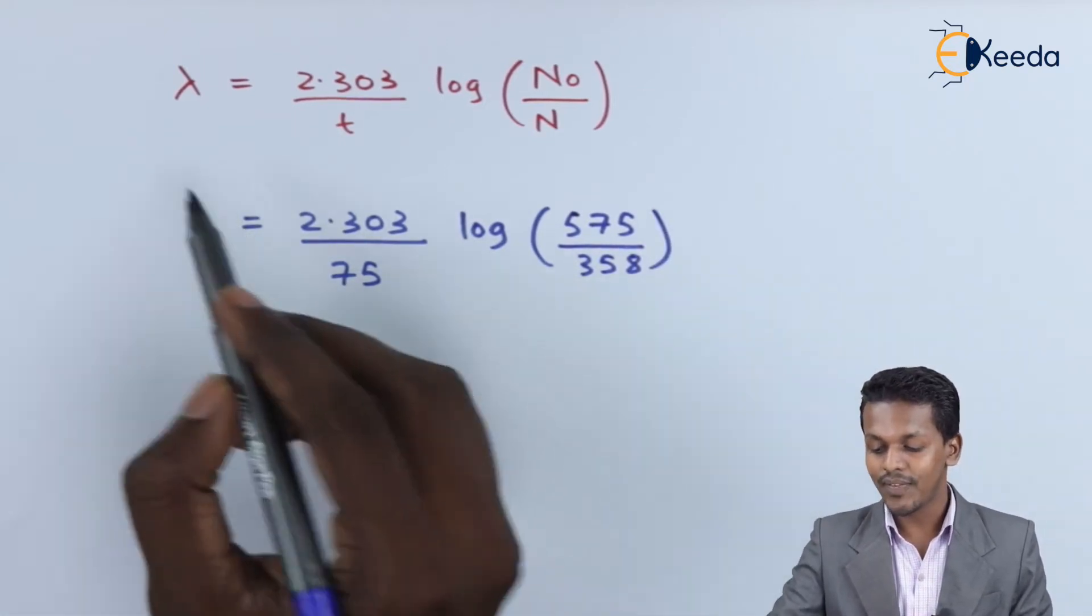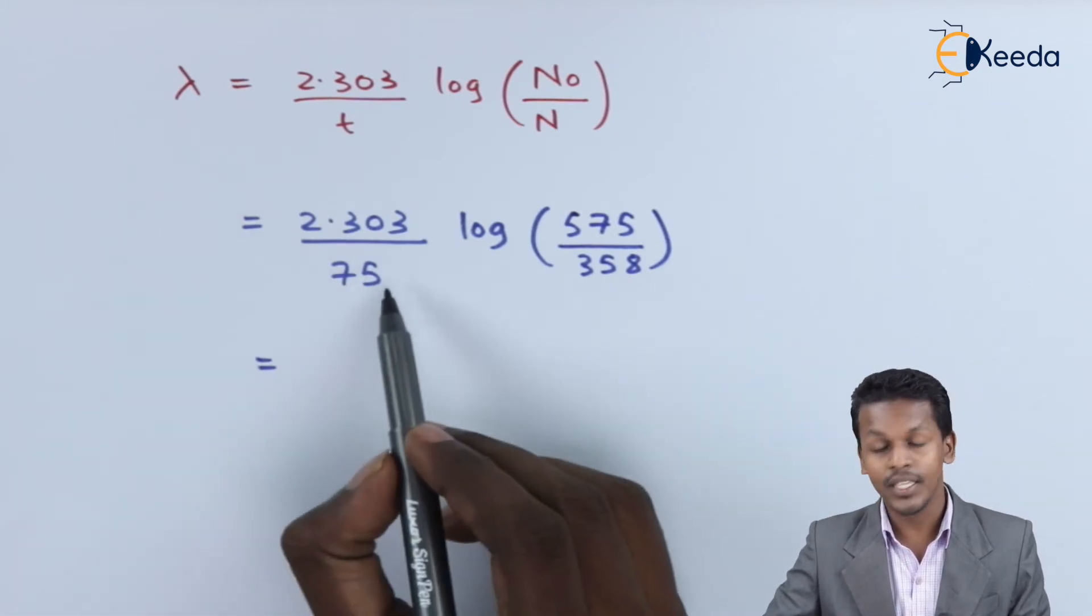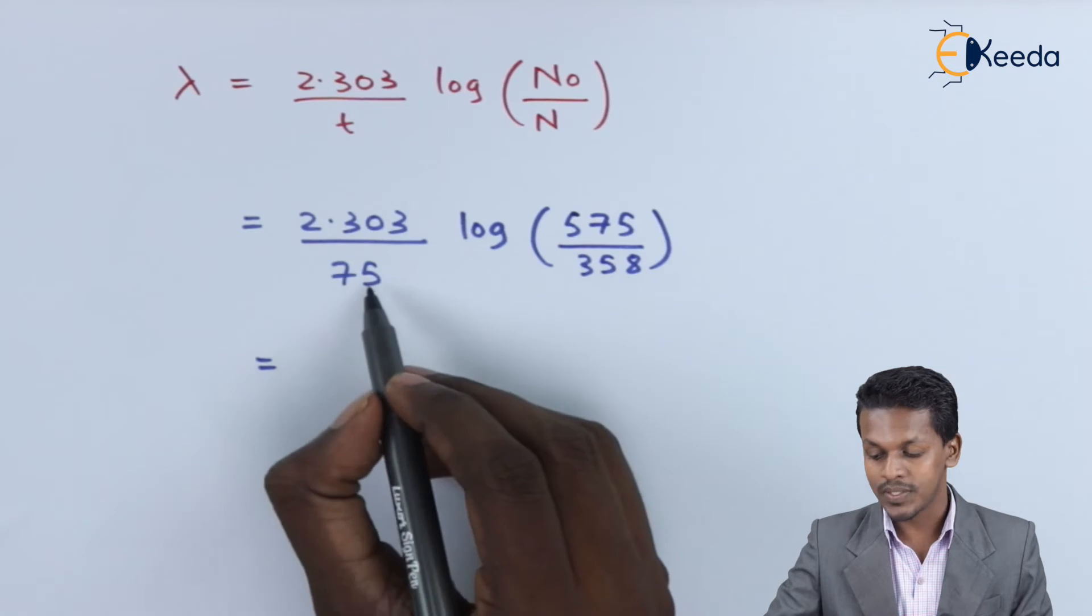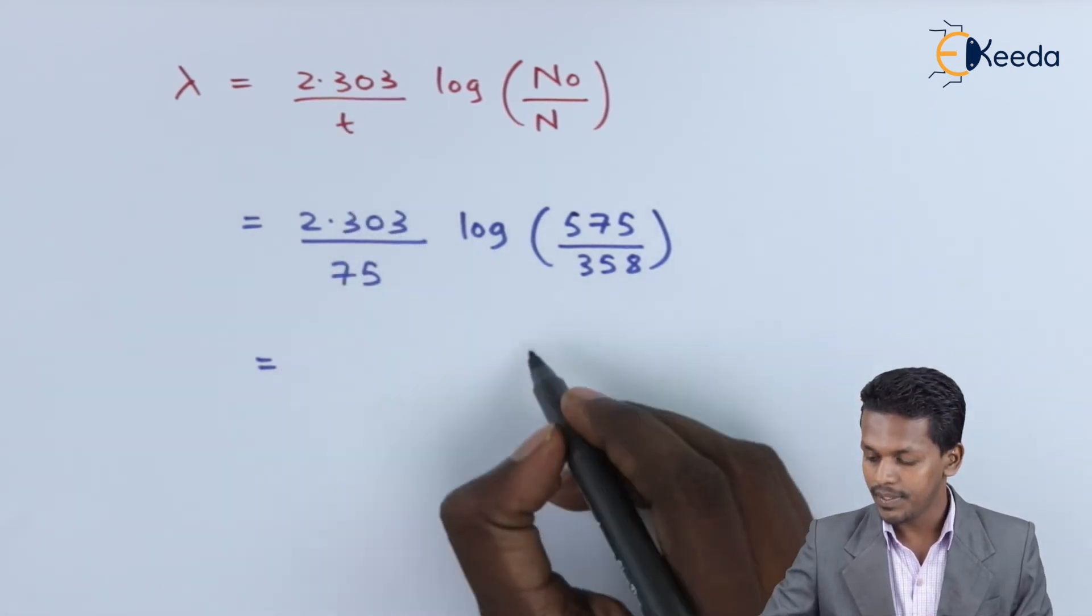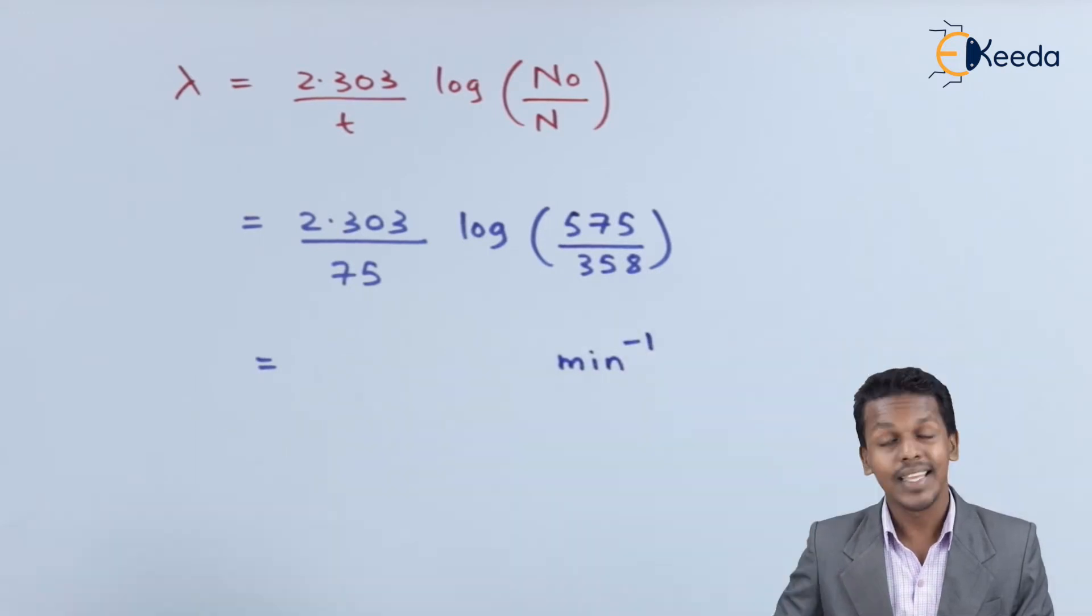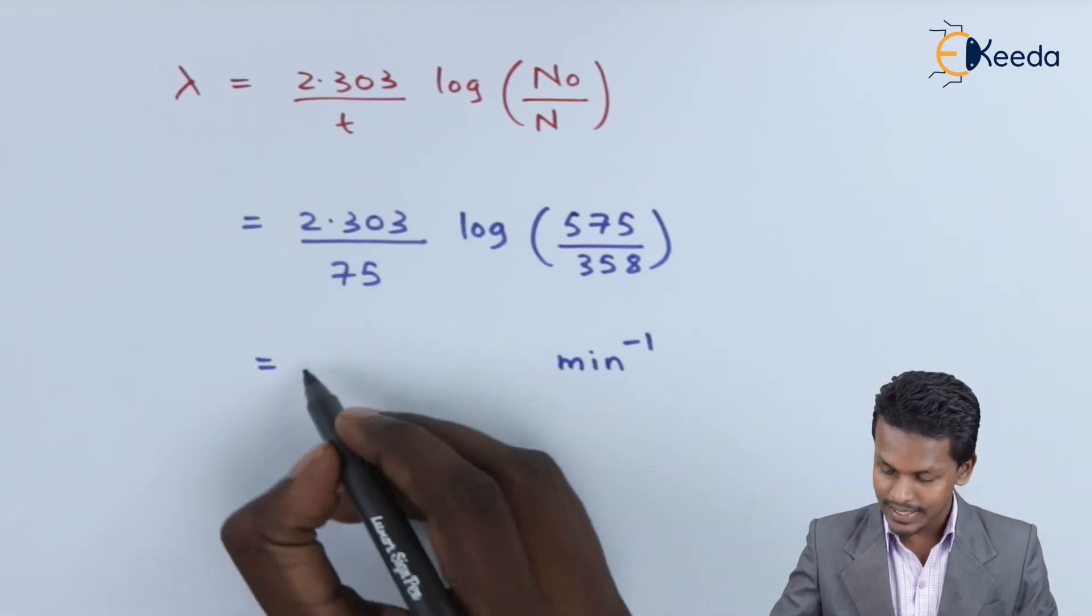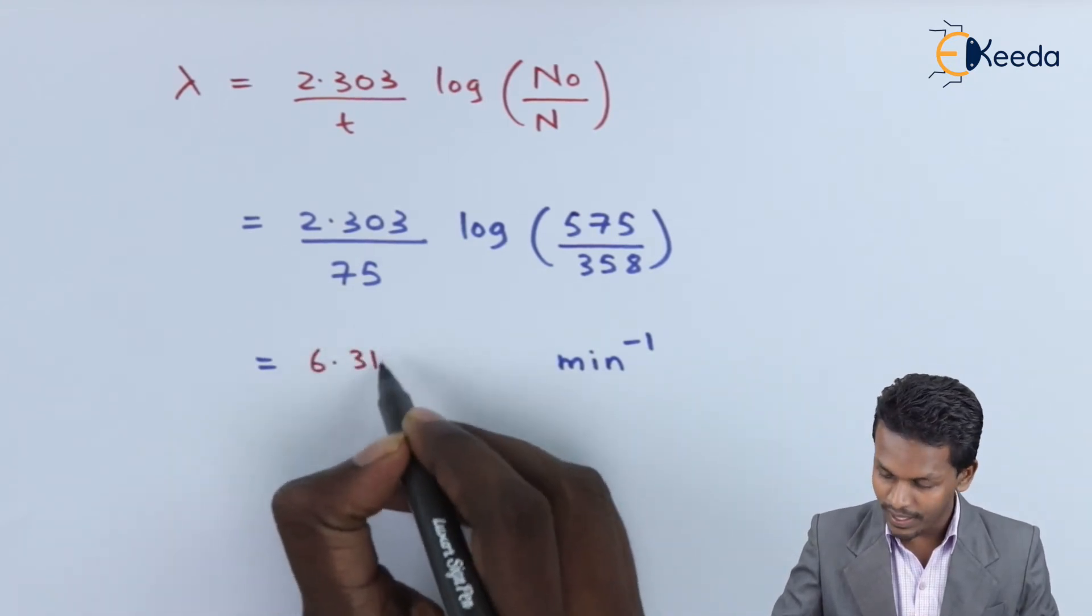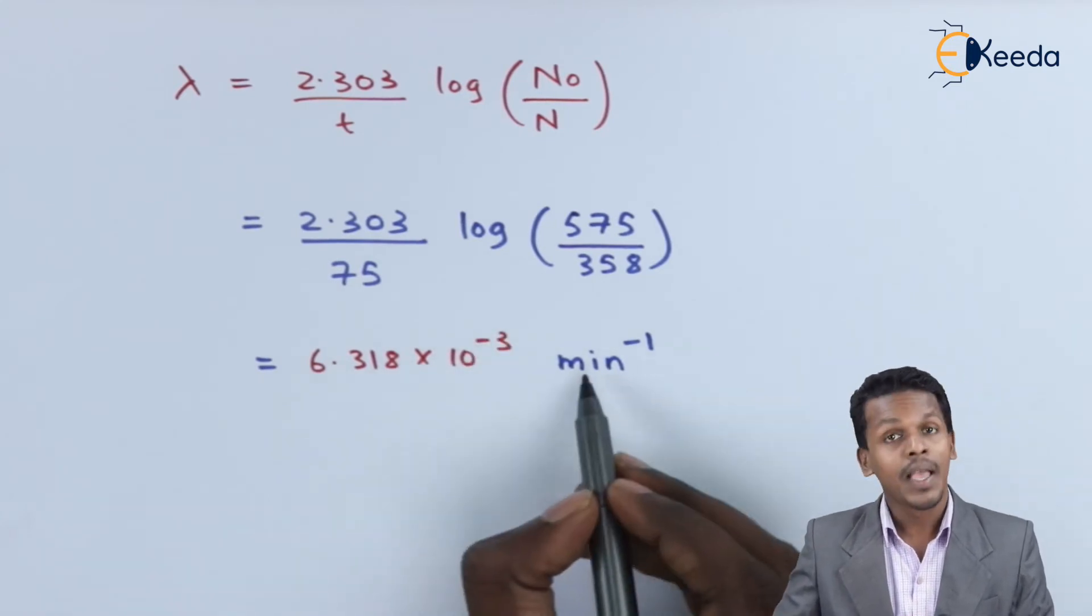After calculating this, we have got a value of 6.318 × 10⁻³ minute⁻¹. Based on this data, we can easily calculate the half-life of that particular element. For that we have a formula: t½ = 0.693/λ.